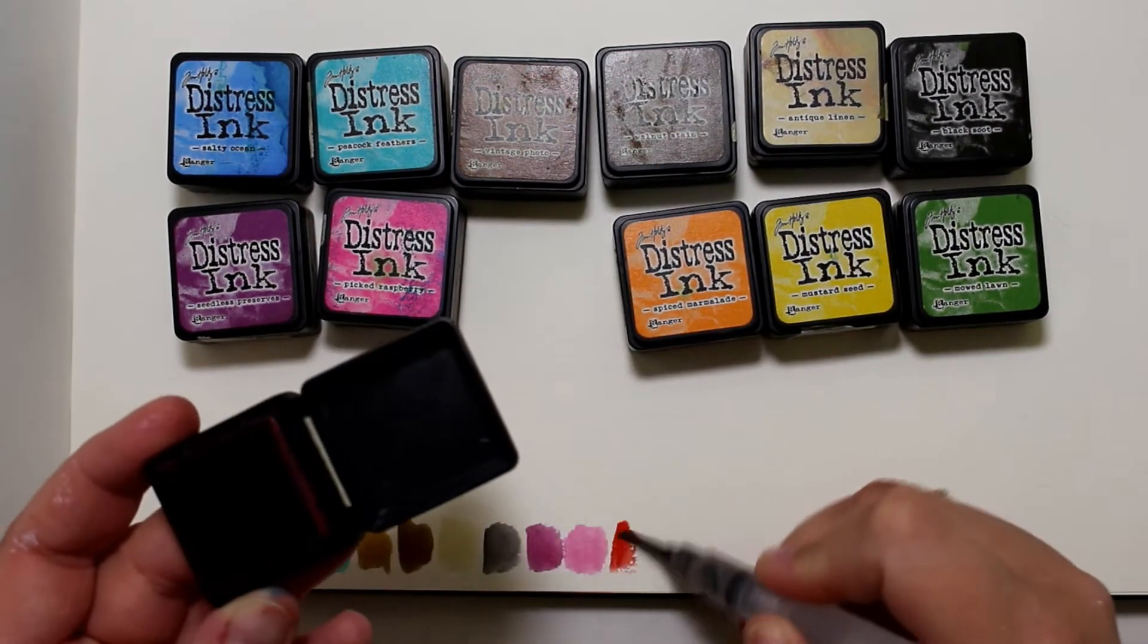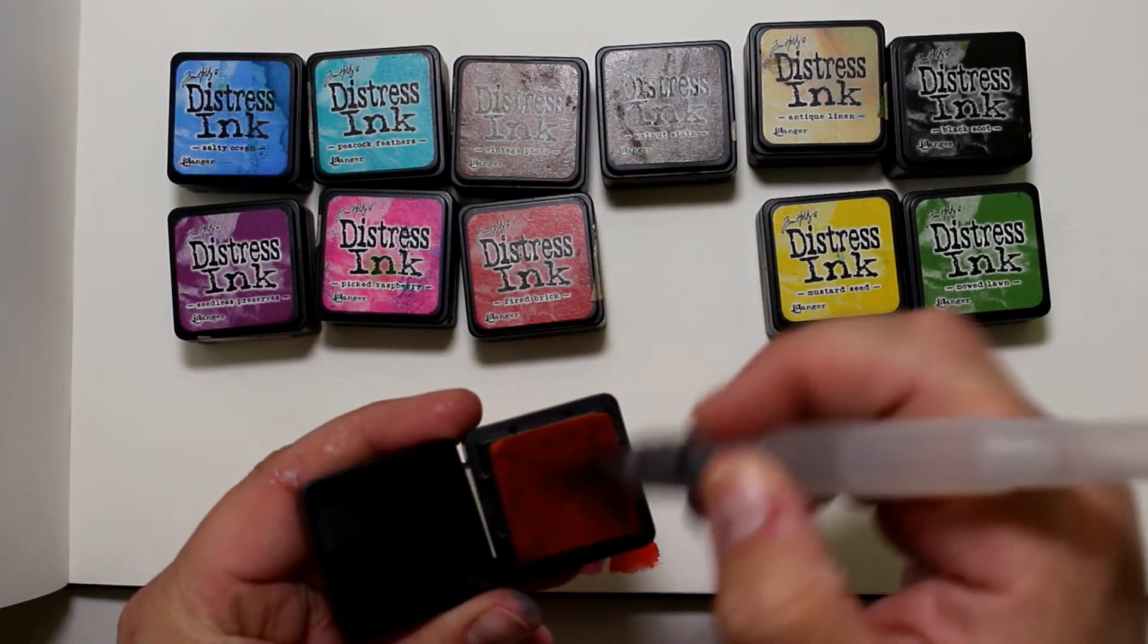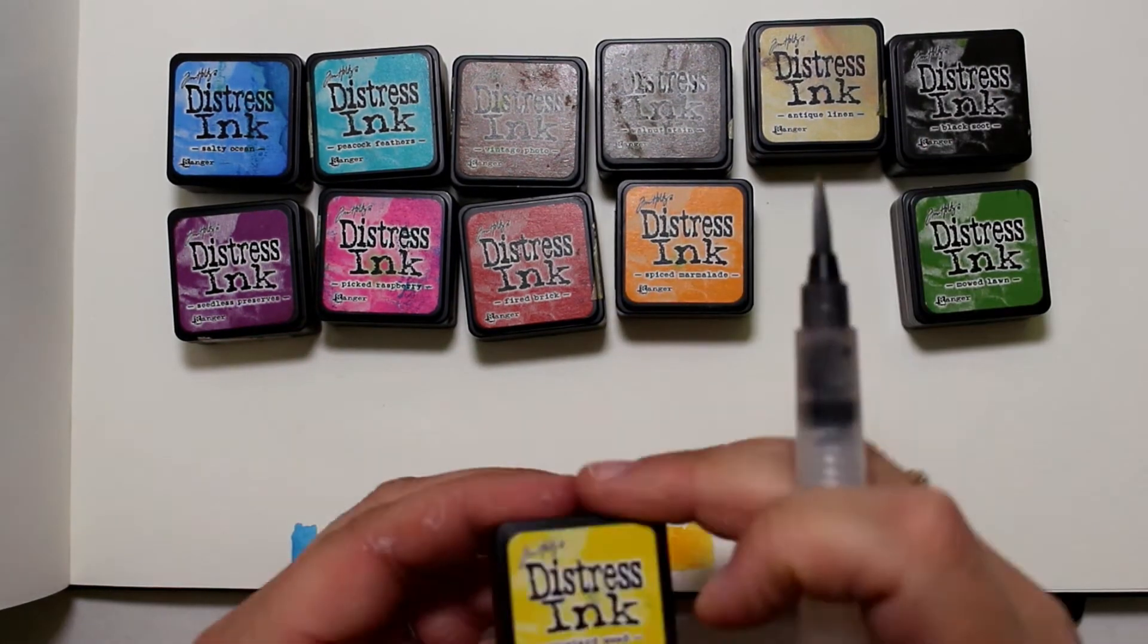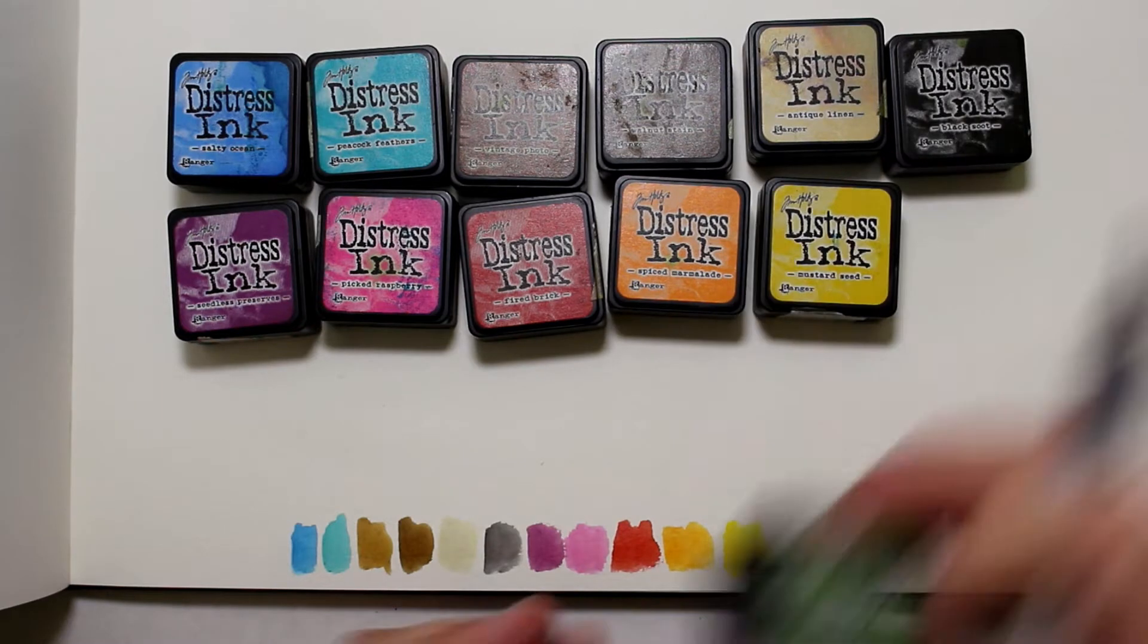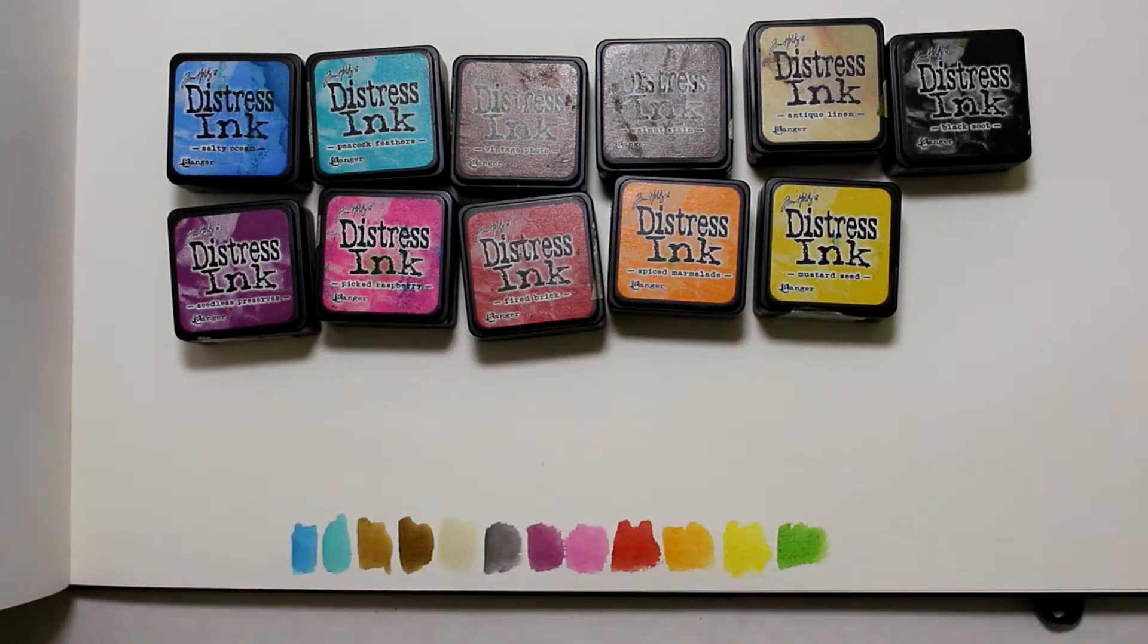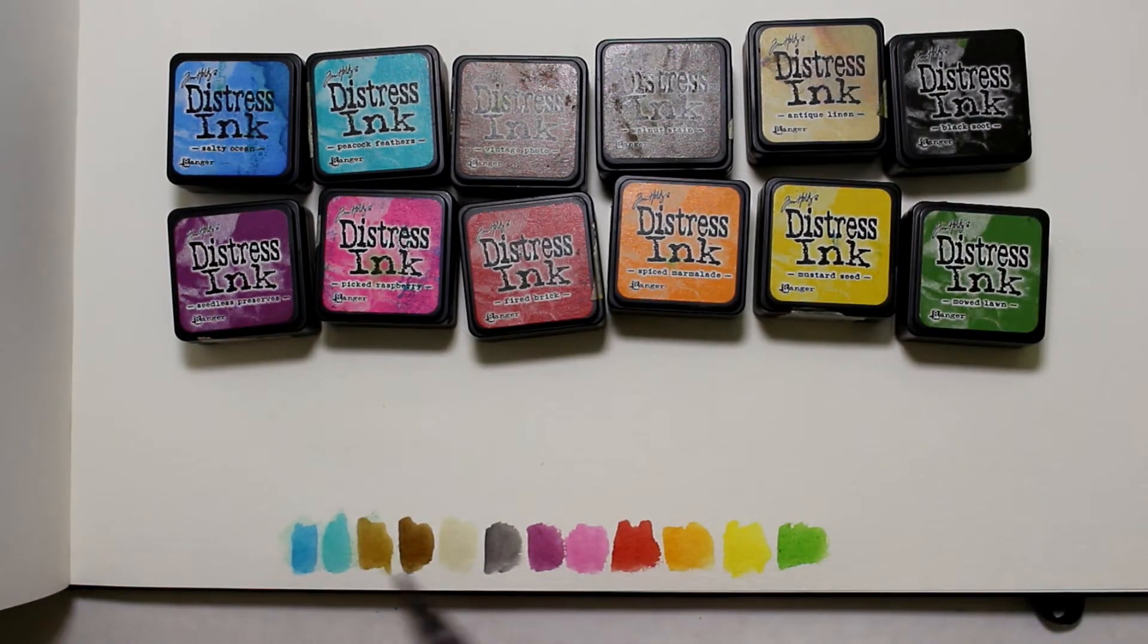Obviously the more that you rub the stamp pad with the bristles, the more ink is going to come off and the less you rub on the stamp pad, the less ink you're going to get. So pretty straightforward. So these are the colors that I have.